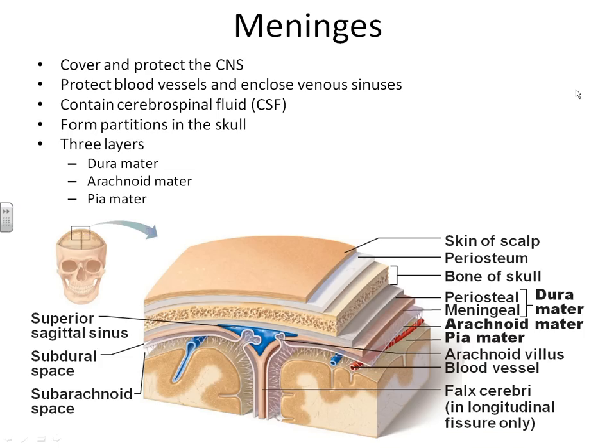Let's conclude our discussions in Chapter 12 within the central nervous system. We have two topics left to discuss: how we protect our brain and spinal cord, and then the spinal cord itself. We have previously gone through all the different portions of the brain.